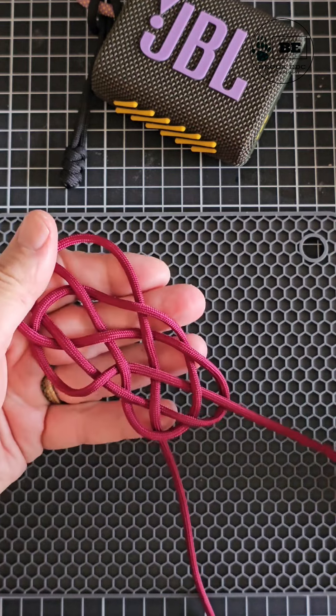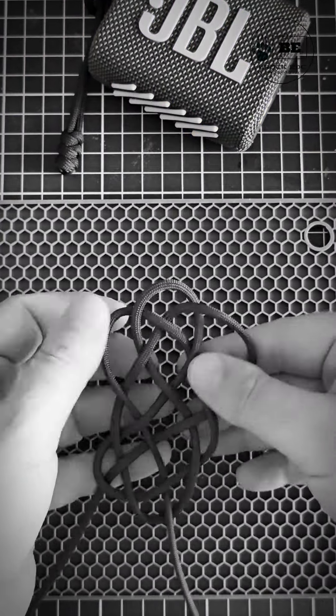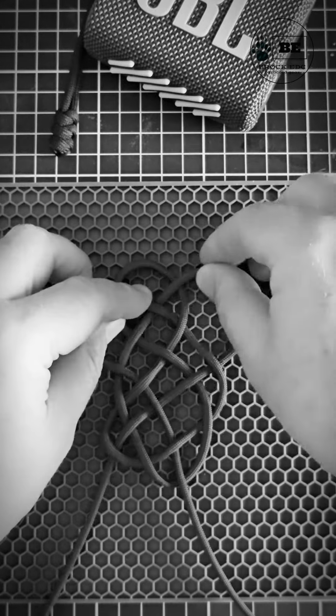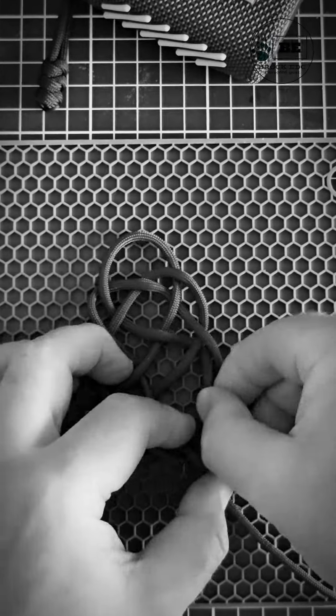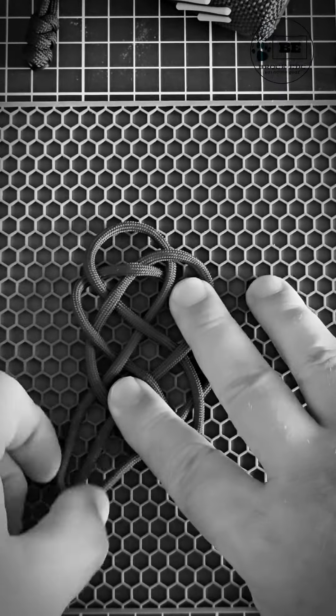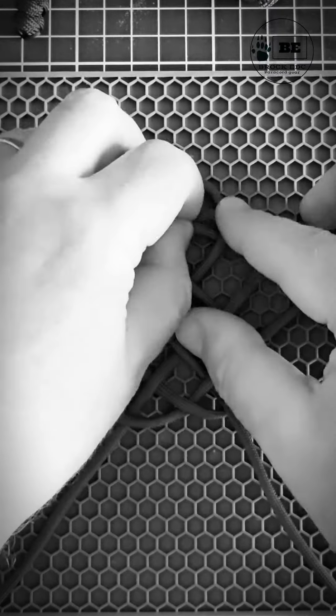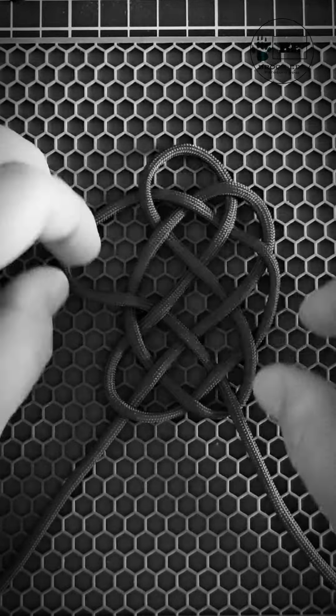You can now start to tighten the weave, finishing off the Napoleon knot. Now if you want to tighten the weave up completely leaving a small lanyard-like loop at the top, then continue to do so and there's an image of what that looked like at the back end of the video.